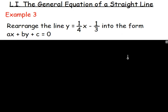Last example — example 3: rearrange the line y equals one quarter x take away one third into the form ax plus by plus c equals 0. I know that unless you're fractions Freddy, you are all freaking out because this has fractions. What you could do is move the quarter x over and the third over, giving y take away a quarter x plus one third equals 0. But a lot of the time you'll want to get rid of the fractions.